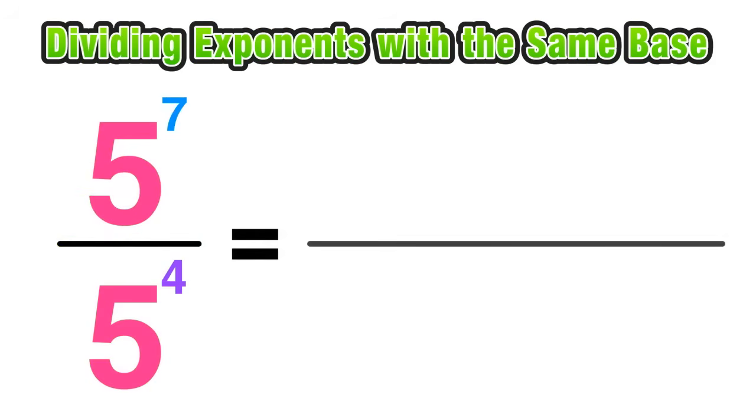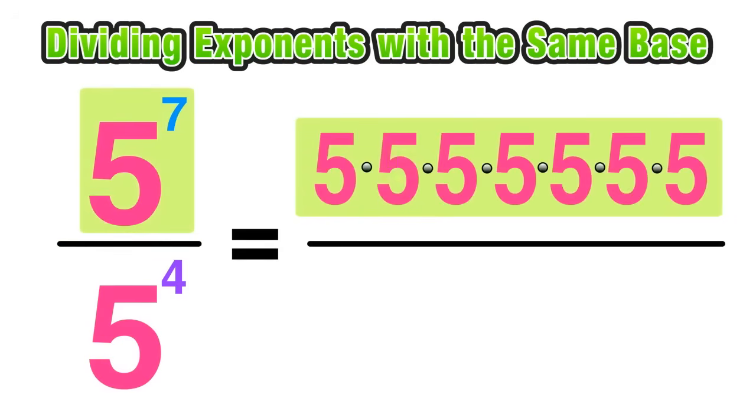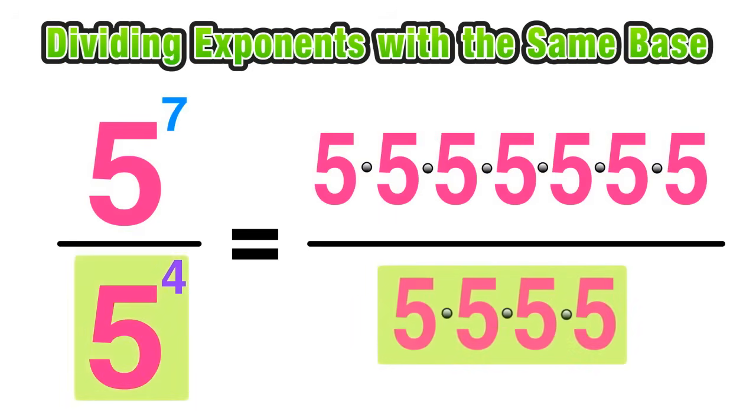So let's go ahead and expand the numerator and denominator. Five to the seventh power is seven fives being multiplied together and five to the fourth power is four fives being multiplied together.